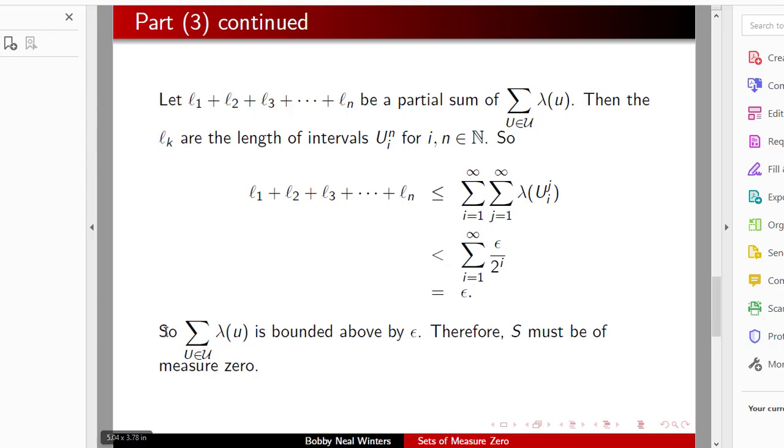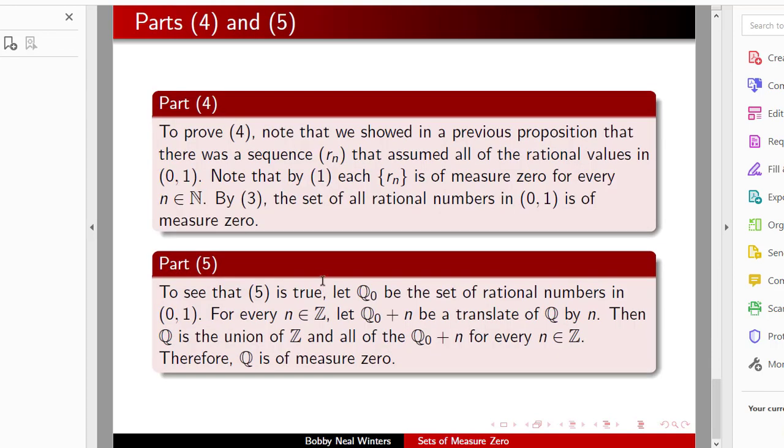So this partial sum is less than epsilon, and so the total sum will be bounded above by epsilon. Therefore, s must be of measure zero. And the final two were basically just corollaries of part three. It's also in the notes I have uploaded on campus.